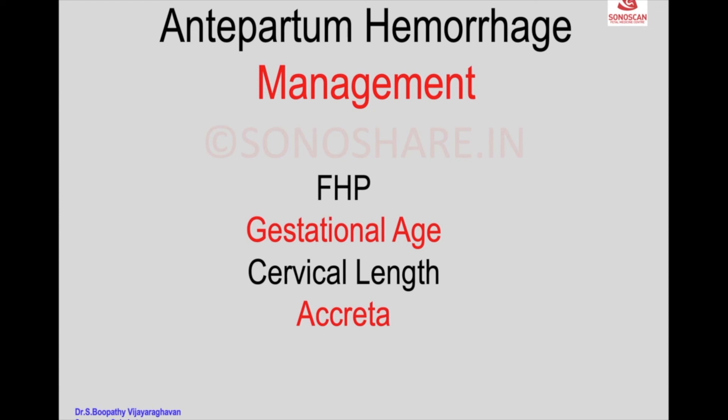Ultrasound is useful to look for fetal heart pulsations — if present, this is reassuring, and if IUFD has occurred it may be diagnosed. Gestational age is important to manage in order to avoid preterm delivery. Cervical length assessment increases the chance of predicting preterm labour and profuse hemorrhage. And in the case of placenta previa, accreta may be associated and must be ruled out.